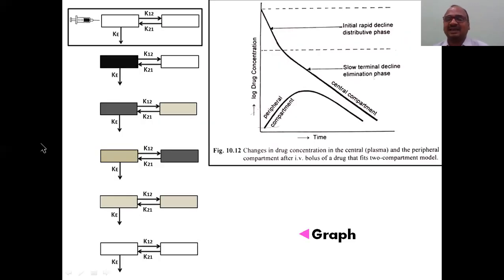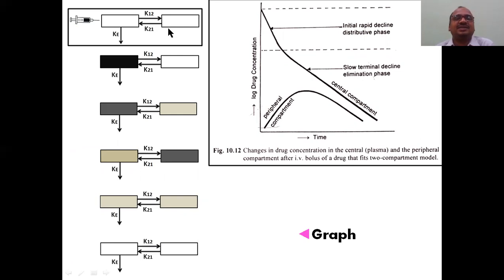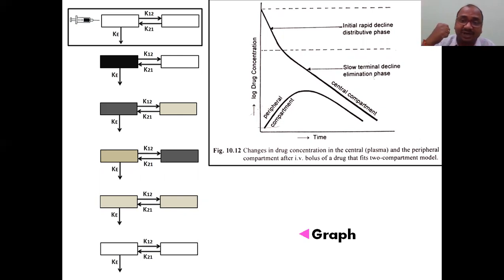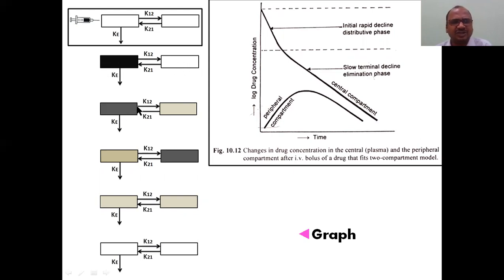Imagine what happens with two compartments. When an IV injection is given, the entire drug immediately enters the first (central) compartment — not slowly as with oral route, but rapidly. So there is a high concentration in the central compartment while the second compartment starts empty. Then distribution begins: drug moves to the peripheral compartment, so the concentration in the central compartment decreases while the peripheral compartment concentration increases.